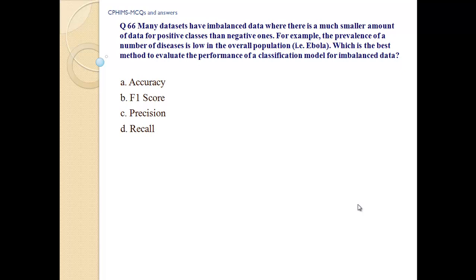Question number 66. Many data sets have imbalanced data where there is a much smaller amount of data for positive classes than negative ones. For example, the prevalence of certain diseases is low in the overall population, such as Ebola. Which is the best method of evaluating the performance of a classification model for imbalanced data? A. Accuracy. B. F1 score. C. Precision. D. Recall.